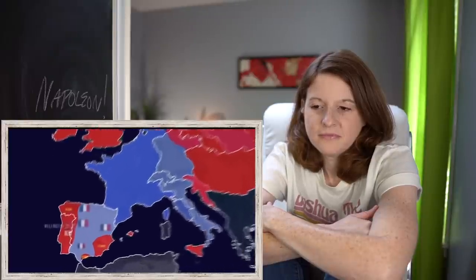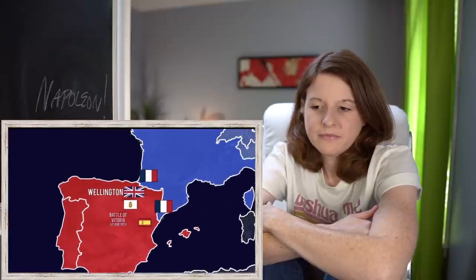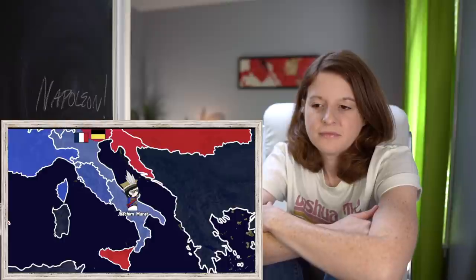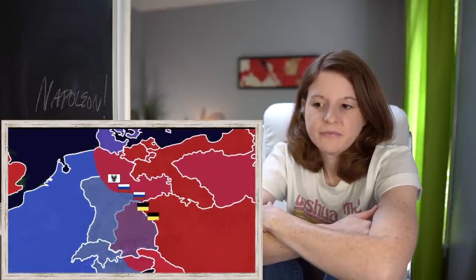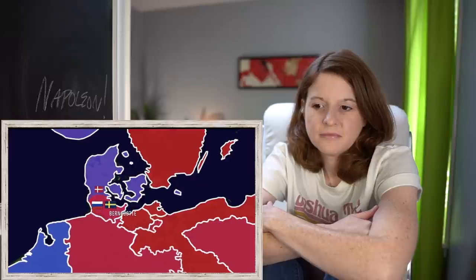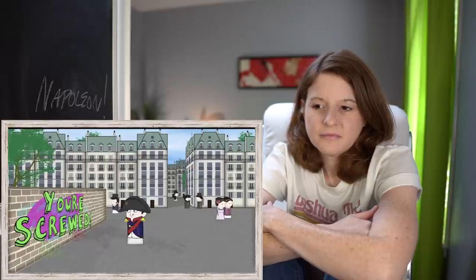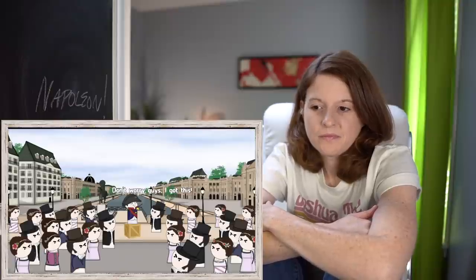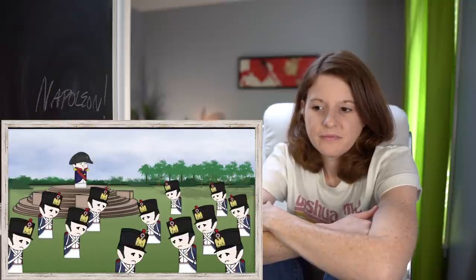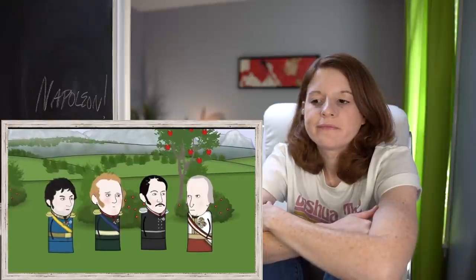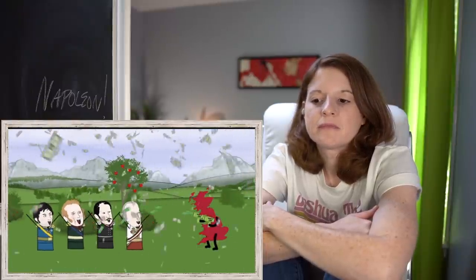Wellington had been pushing the French out of Spain for years and was now crossing into France. Austrian armies had pushed into Italy, Napoleon's cavalry commander Murat switched sides, German states turned against him, and the Confederation of the Rhine collapsed. Bernadotte invaded Denmark, forcing them to join the coalition, while the Netherlands were liberated. Napoleon prepared to keep fighting. He called up more conscripts to defend the exhausted nation. The Allies ultimately agreed that the ultimate aim was the deposition of Napoleon entirely.